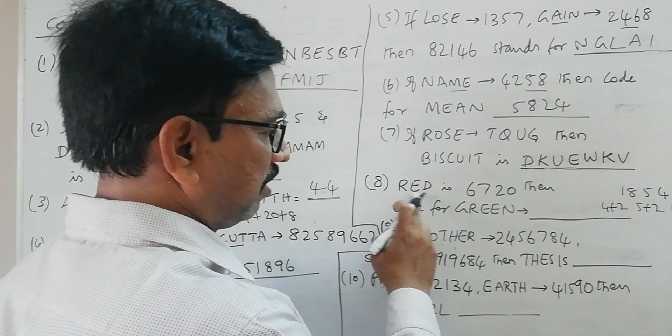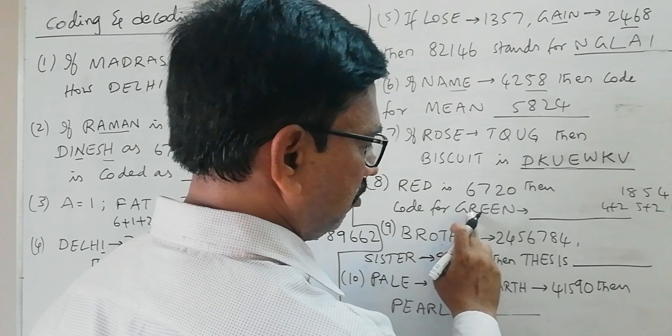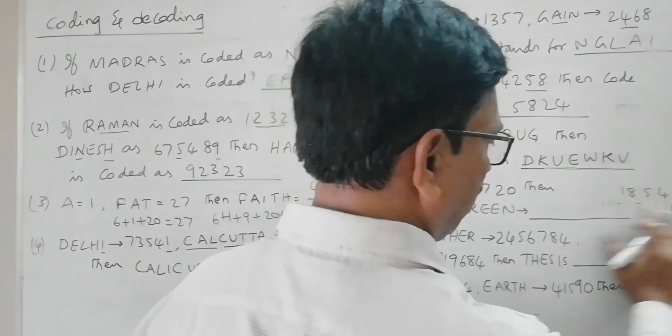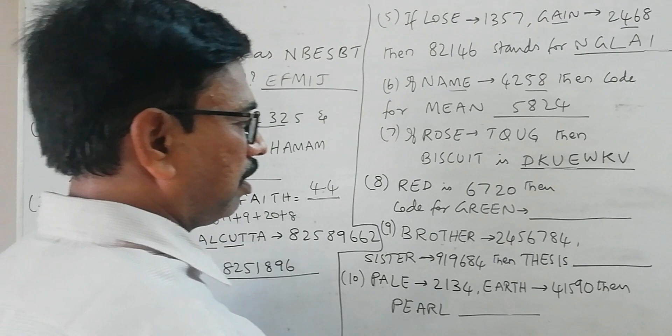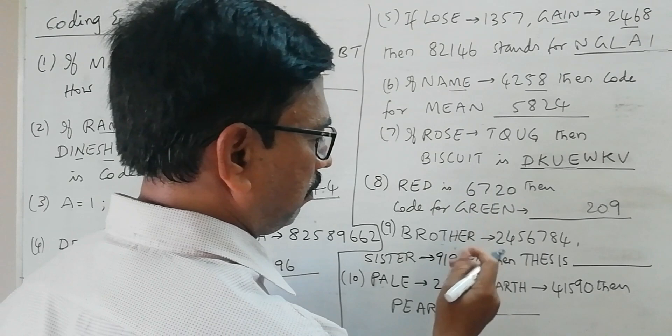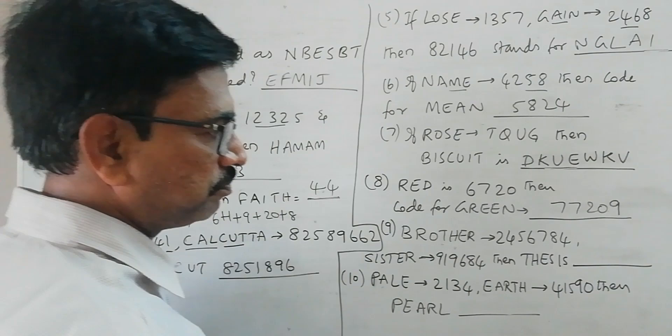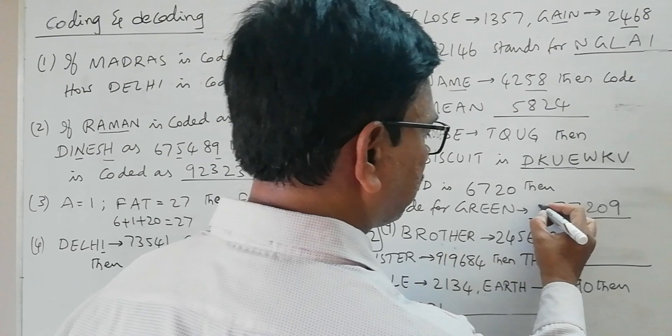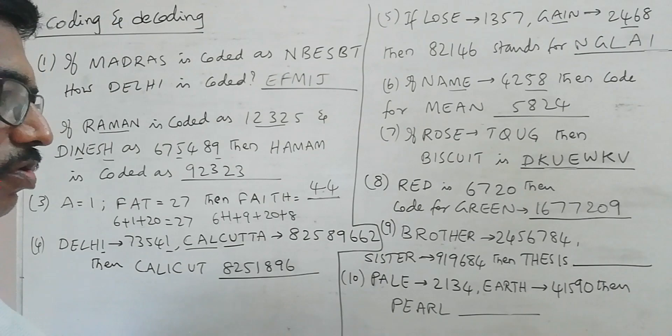In the same way if you take the code for GREEN, what we get? So G, G is the 7th letter, so its code is 9, we have to take it at the end. Then R is 20 because here we have R is 20, and E is 7, so 7-7. Then N is the 14th letter, so 14 plus 2 is 16. So NEERG. So this is how we can code GREEN.